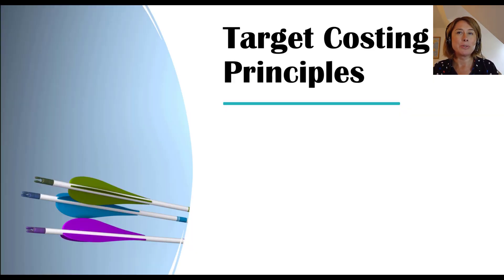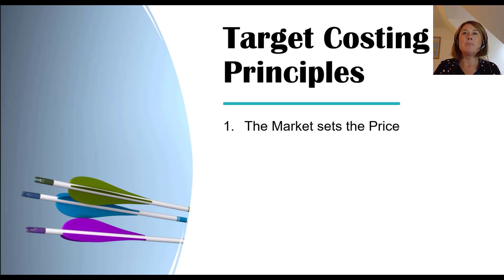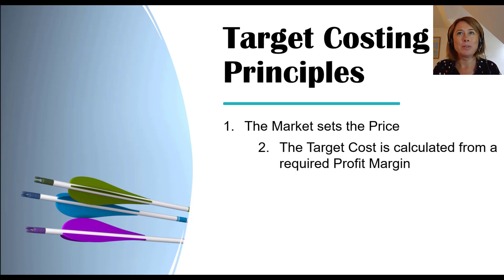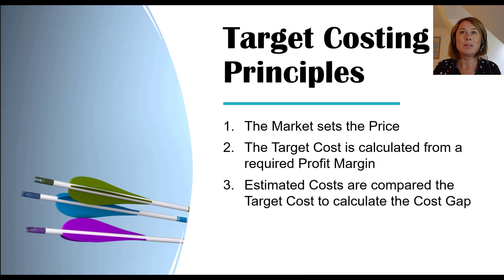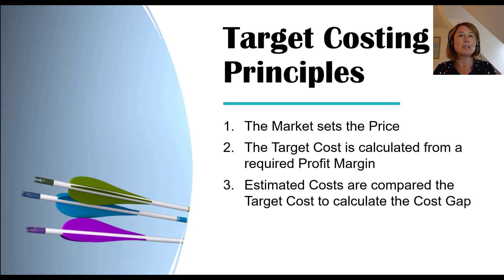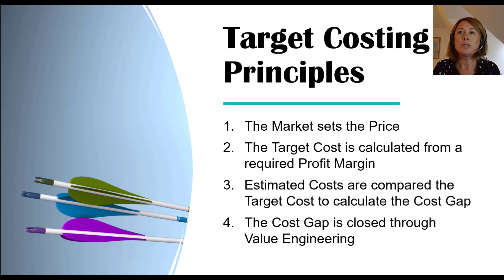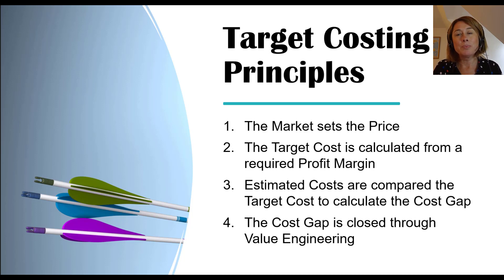Let's start with target costing principles. Firstly, the market sets the price. The target cost is then calculated from the required profit margin off that market price. Your estimated cost to produce that product or service is then compared to that target cost, and a cost gap is then calculated. It is this cost gap which is closed through value engineering.